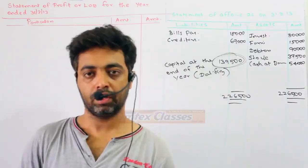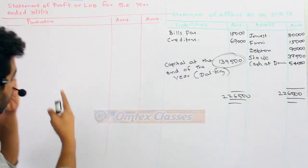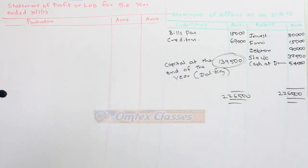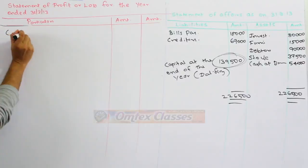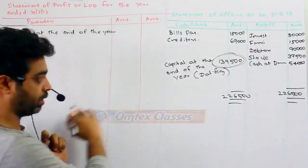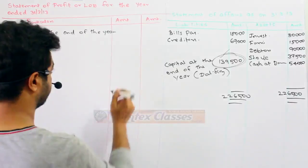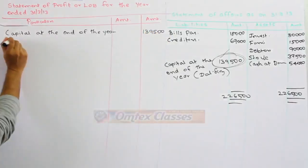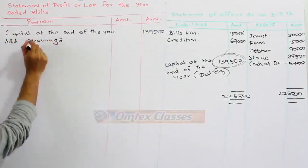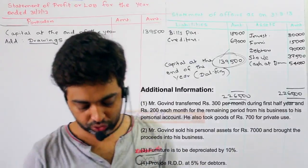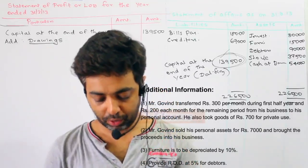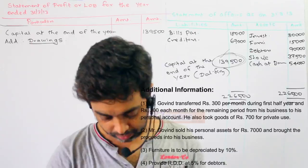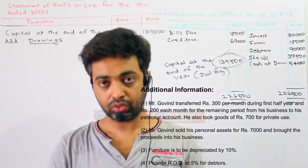Now we have here the statement of profit and loss for the year ended 31st March 2013. Starting at the end of the year, the capital at the end of the year is $1,39,500. Add drawings — Mr. Govind transferred Rs.300 per month during the first half year and Rs.200 each month for the remaining period.